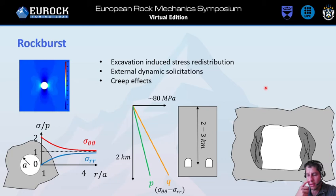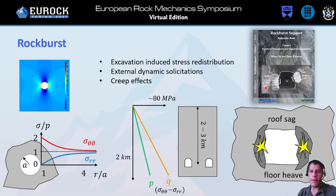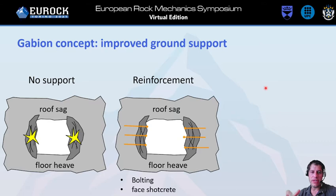Independently of the cause, what is usually observed is wall damage, but also roof sag and floor heave. This is key to the introduction of the GABION concept. More detail can be found in the Kaes and Kaiser book. Without support there is danger — risk to people and infrastructure. We can use reinforcement to prevent this, and to design reinforcement composed of bolting and face shotcrete, we can use modeling.